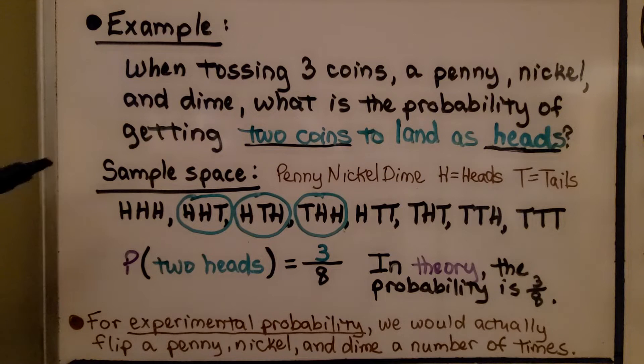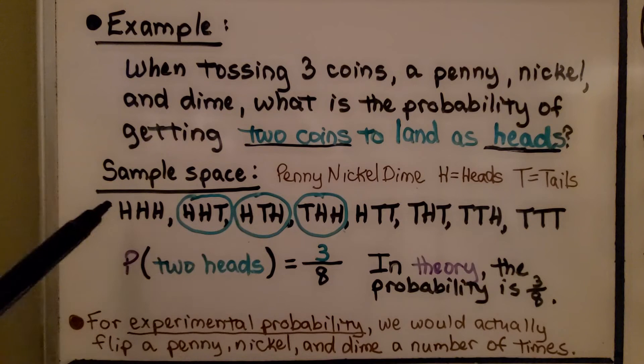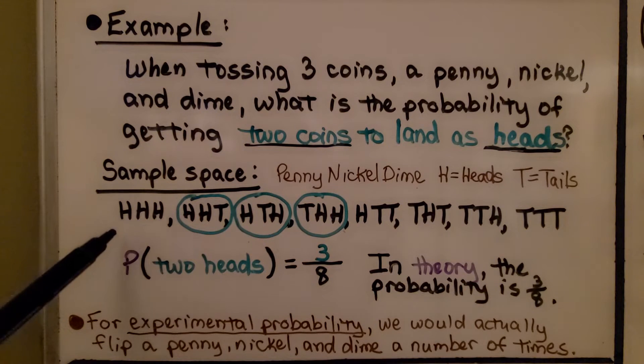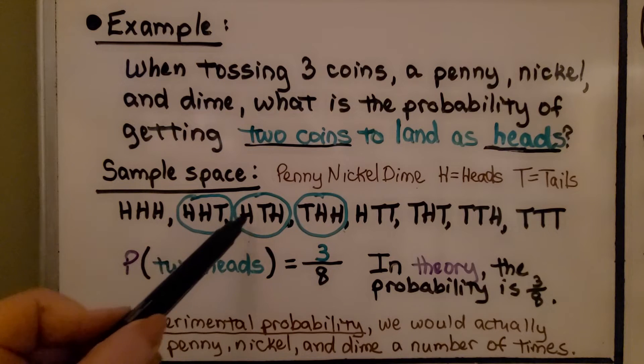Our sample space would be for penny, nickel, dime. That's the order we're doing it: penny, nickel, dime, penny, nickel, dime.